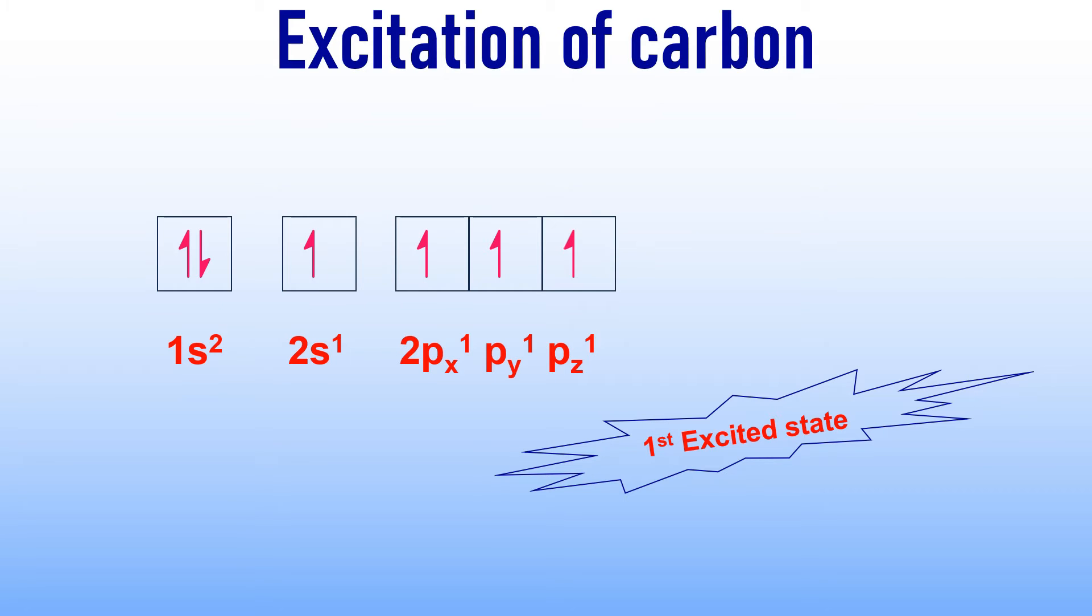This state is referred to as first excited state. In this state, the electronic configuration is changed to 1s² 2s¹ 2px¹ 2py¹ and 2pz¹. In this state, there are 4 unpaired electrons. Hence, carbon can form 4 bonds in the first excited state.